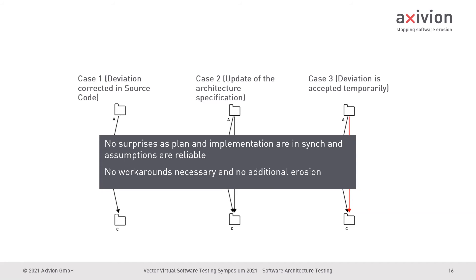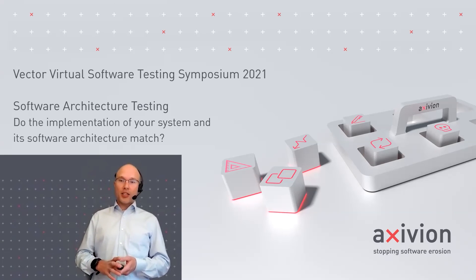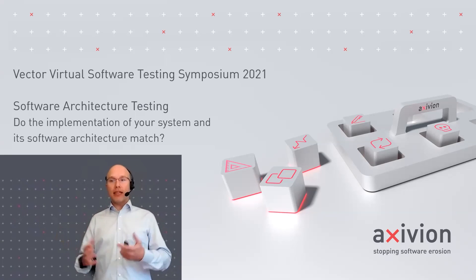No surprises — and no surprises is a good thing in software development and software testing. Also, if you don't have these bugs arising, you don't need those workarounds that later on, as in our example, turn into clones or other problems. So you prevent future bugs as well. And since we still have a little time, I can show you how that looks in a real example.